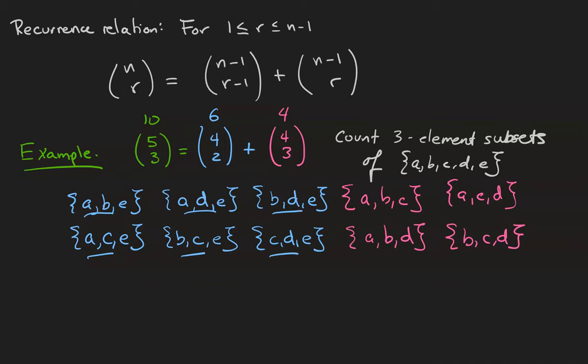Then there are four ways to choose three elements from a, b, c, d, and if we take all of those subsets together we get the ten three element subsets of a, b, c, d, e.